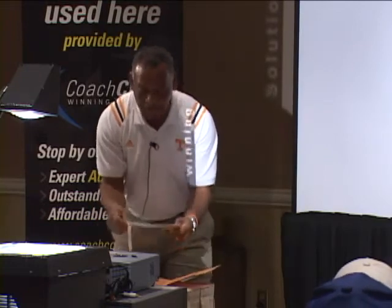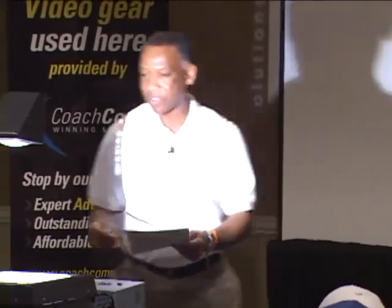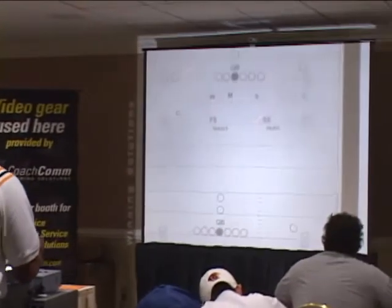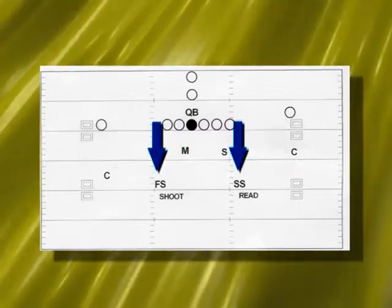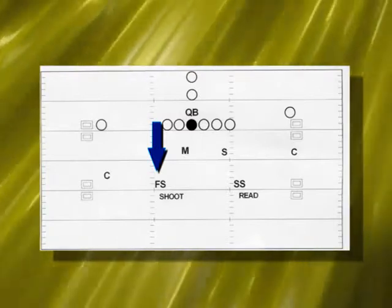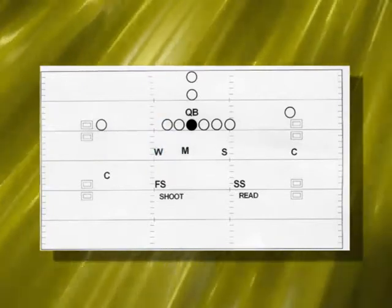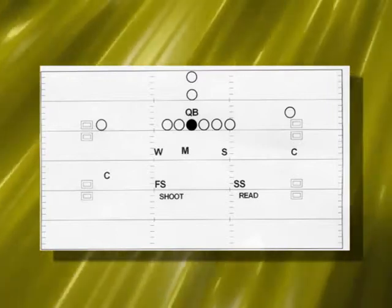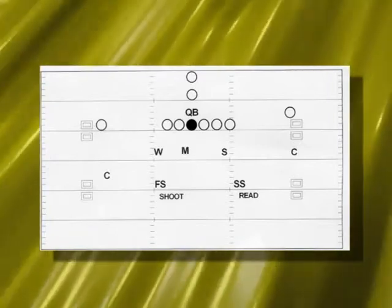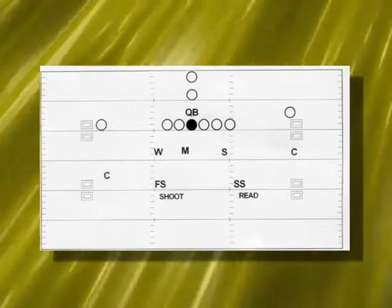If I'm in cover eight and I hear 'eight,' that linebacker knows he is curl-flat, but the safety is forcing it. We line up and play cover eight - the corners are basically eight yards off the receiver, and we can play them bump and run or bail them. The safeties are independent. In this case, that safety says 'shoot' because it's still safety force, but he's not a curl-flat defender, so we call it that. If you only run quarters and aren't mixing cover three, just call it sky.